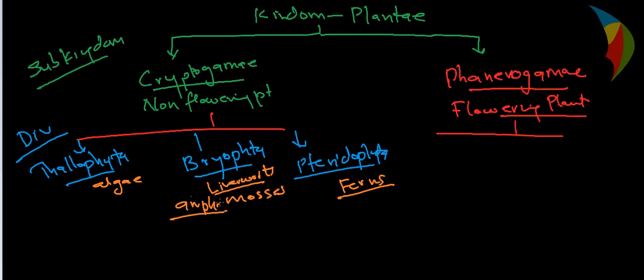Bryophyta plants are the first colonizers of the land. They both live on land and in water — they need water to undergo fertilization, so they are like amphibians in the plant kingdom. Ferns are mostly found in shady, humid, and cool conditions.